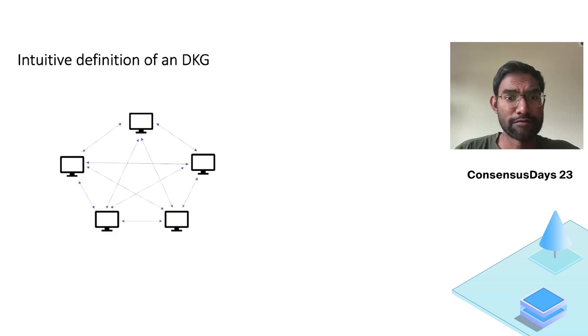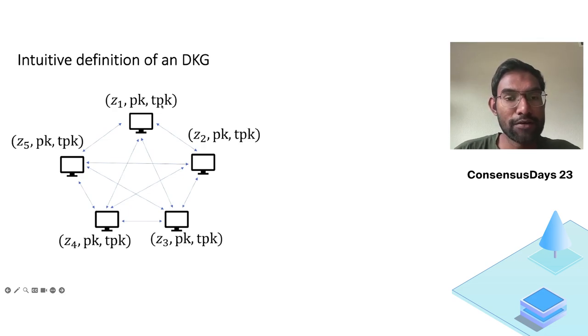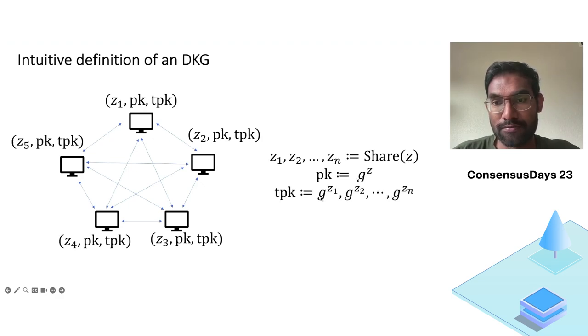What's an intuitive definition of distributed key generation? It's a multi-party computation protocol among a set of nodes where each node outputs zi and some common value. Party one will output z1 and some common value, party two will output z2 and the same common value, so on and so forth. Where these zis are secret shares, the magic hat from the previous slide, of the secret z. And the public key is g to the z and threshold public keys are g to the power of each of their individual secret shares. So we are focusing on discrete log-based threshold systems.